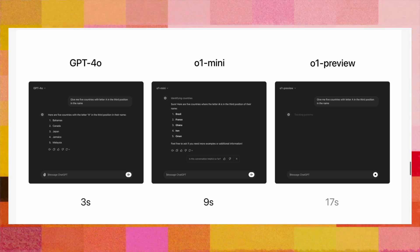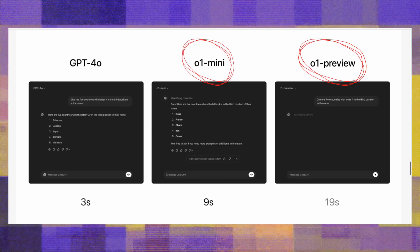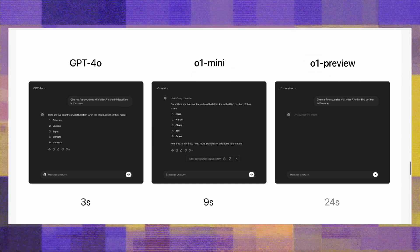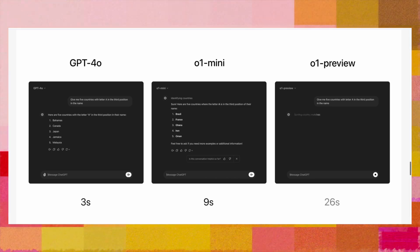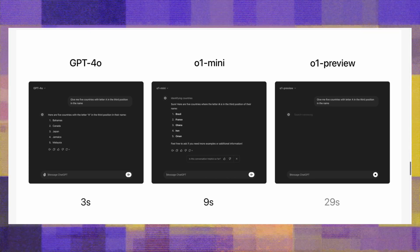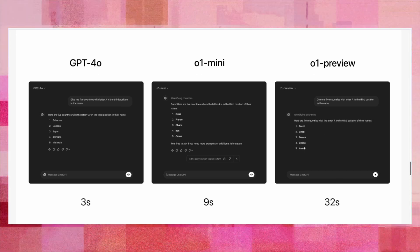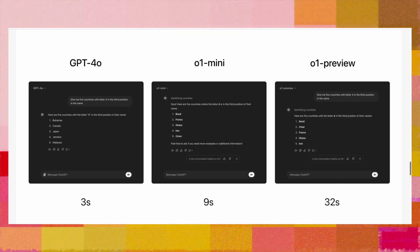With O1 models — and there are a bunch of different O1 models we will talk about — the model is able to identify the thought process: what exactly has been asked, what the prompt is. It divides the prompt into different reasonings, and all those reasonings are reprompted again and again internally to give the proper output. This takes more time, but the accuracy of the result is much higher.